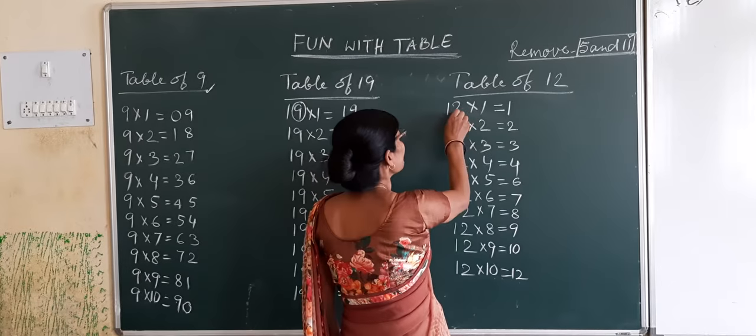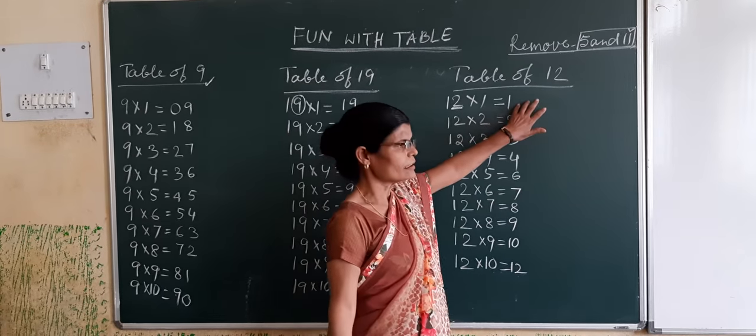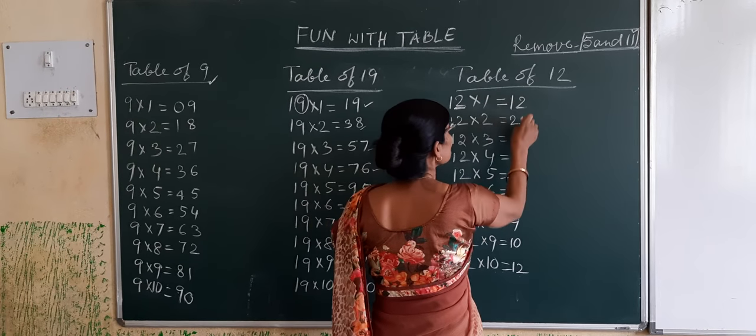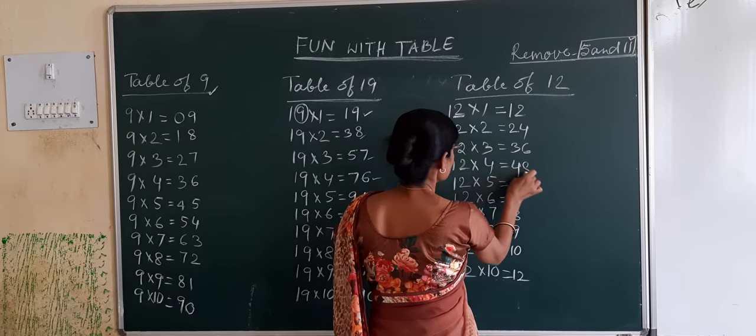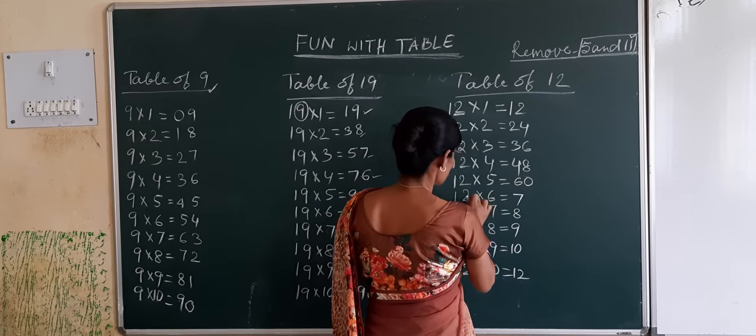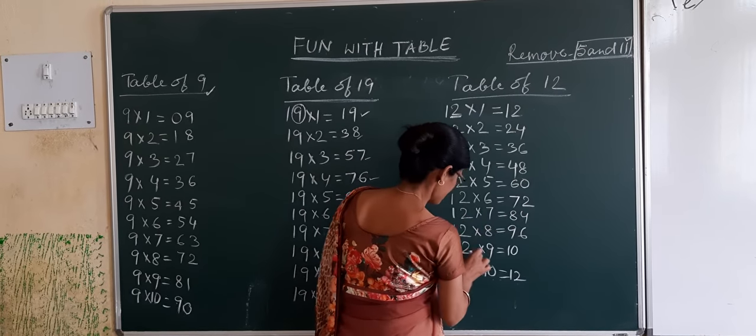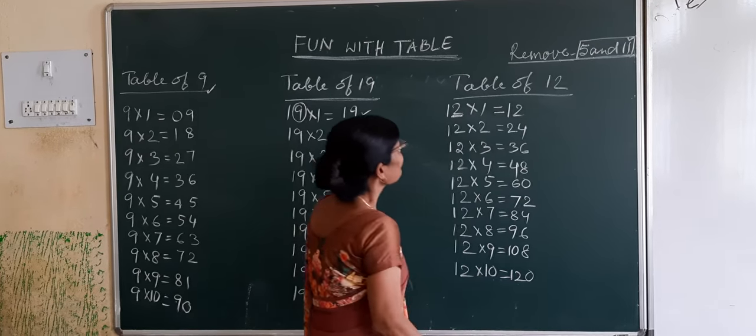And read the table of 2 and put the ones digit after this: 2 x 1 = 2, 2 x 2 = 4, 2 x 3 = 6, 2 x 4 = 8, 2 x 5 = 10, 2 x 6 = 12, 2 x 7 = 14, 2 x 8 = 16, 2 x 9 = 18, 2 x 10 = 20.